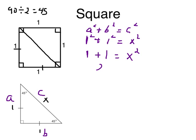1 plus 1 is 2. To solve for X, we undo the power 2 by square rooting. X is equal to square root of 2.